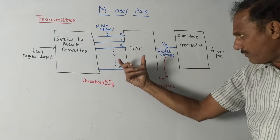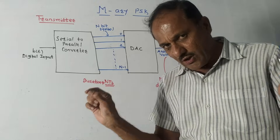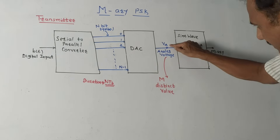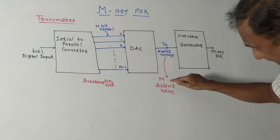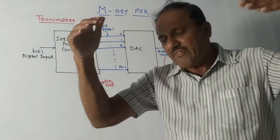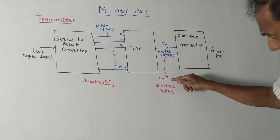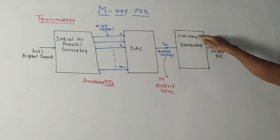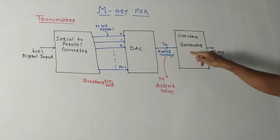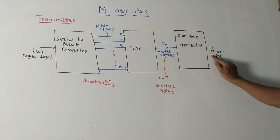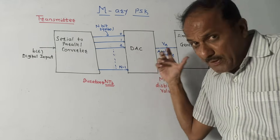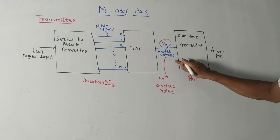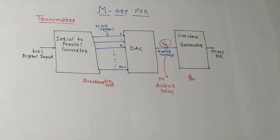The parallel n-bit output is given to a DAC — digital-to-analog converter — which converts the digital signal into an analog voltage Va. This analog voltage takes M distinct values corresponding to the M symbols generated in M-ary PSK. The last block is a sine wave generator: given Va with its M distinct values, it produces a sine wave output where the amplitude is constant but the phase φm changes according to the variation in the analog voltage Va.